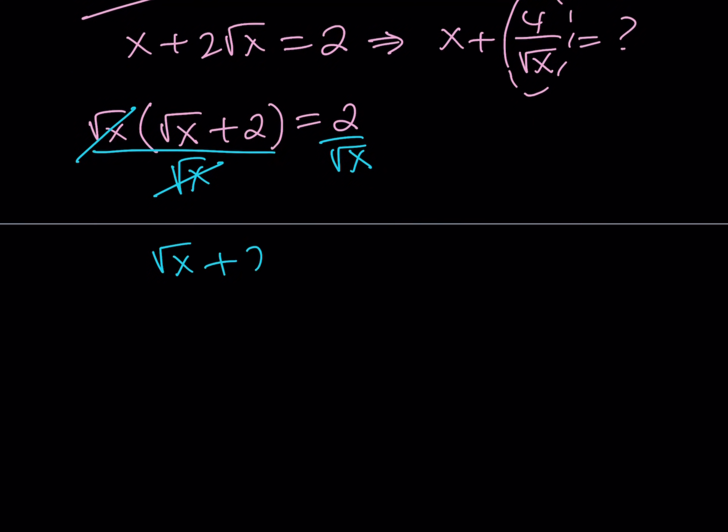And from here, I get square root of x plus 2 is equal to 2 over the square root of x. So, if I double both sides, I get 2 root x plus 4 is equal to 4 over root x. And this is exactly what I want to use over there.